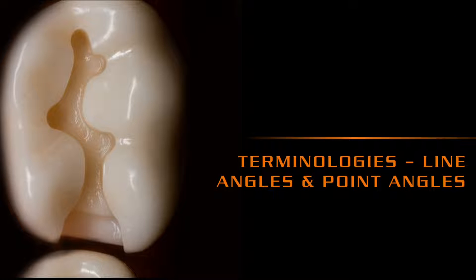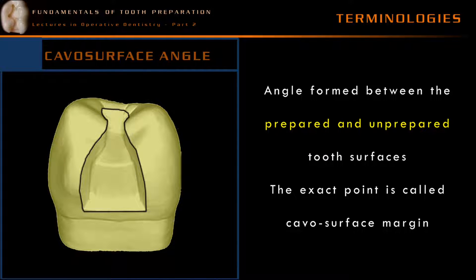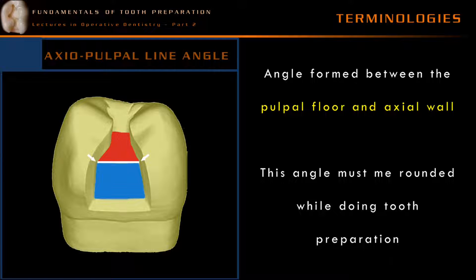In this section I will be teaching about the terminologies related to line angles and point angles. A line angle is a junction of two planar surfaces of different orientations. The diagrammatic representation here clearly illustrates what a line angle is — the meeting point of two planar surfaces of different orientation. A KO surface angle is an angle formed between the prepared and unprepared tooth surfaces, and the exact point of meeting between the external and internal surface is called the KO surface margin.